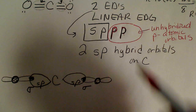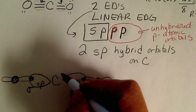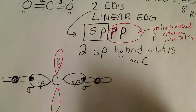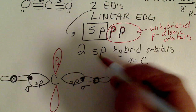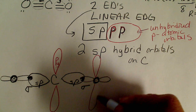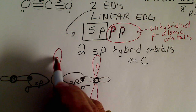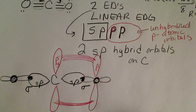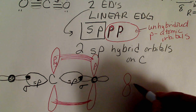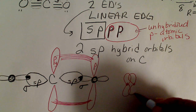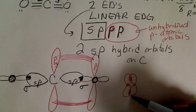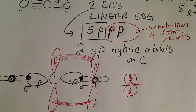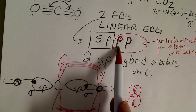For the P orbitals, I'll draw one of those — for example, this might be the P in the Y direction on the carbon. That could overlap in the pi fashion with the P orbital on the outer oxygen atom. This double bond has the pi bonding, which is the sideways overlap of two atomic orbitals. Whenever we have overlap above and below, or in front or back of the internuclear axis, that's the pi bond. So that's one of the unhybridized P orbitals.